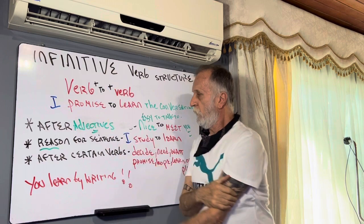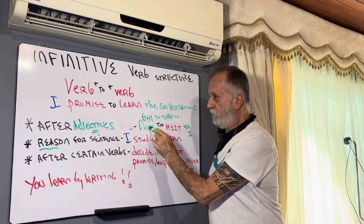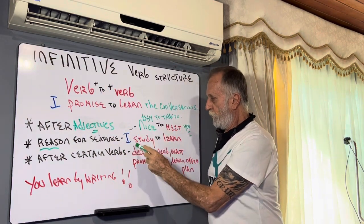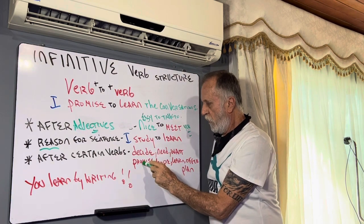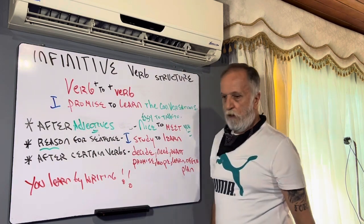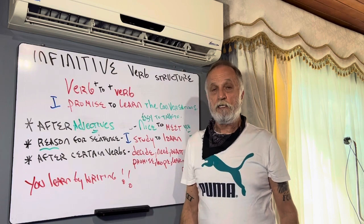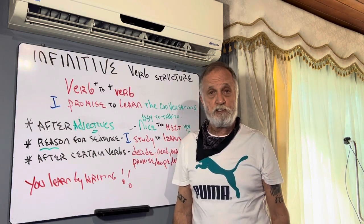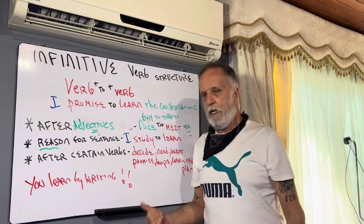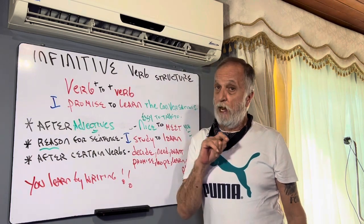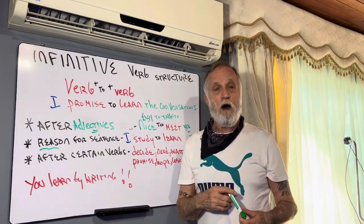Infinitive — after adjectives, the reason for the sentence, certain verbs. You know we use Oxford books and Cambridge books — they're the best. Look in your book, you've got lists. Write sentences, YouTube me, I'll help you.